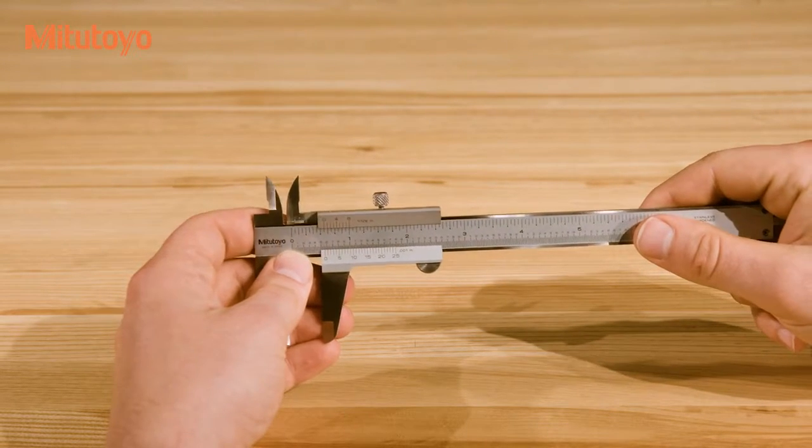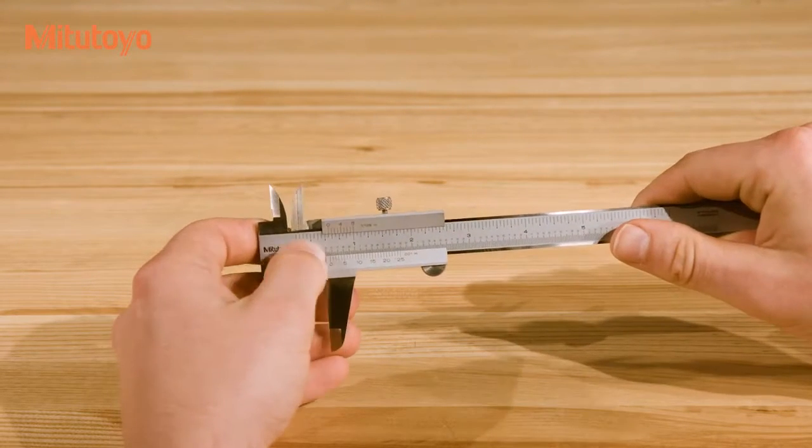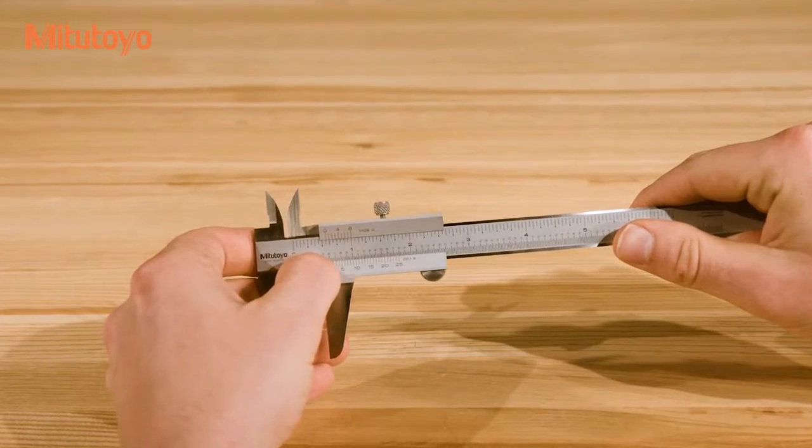On inch calipers like this one, the main scale is marked in .025 inch intervals and is read directly by finding the last graduation passed by the zero mark on the sliding jaw.